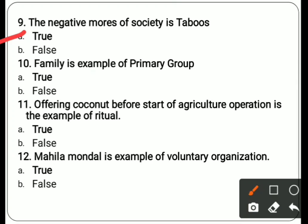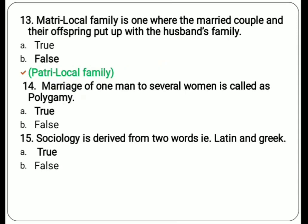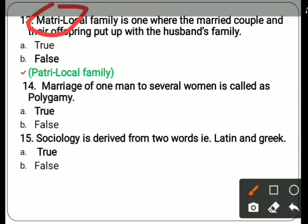Tenth: family is an example of a primary group — answer is true. Eleventh: offering coconut before the start of an agriculture operation is an example of a ritual — answer is true; it is a ceremony performed before starting work. Twelfth: Mahila Mandal is an example of a voluntary organization — answer is true.